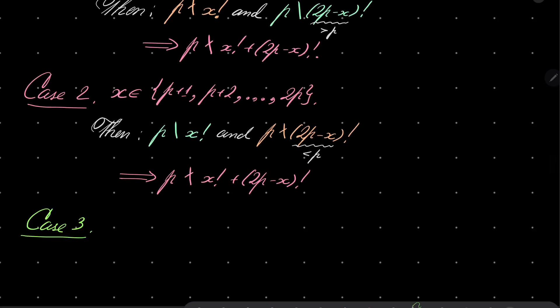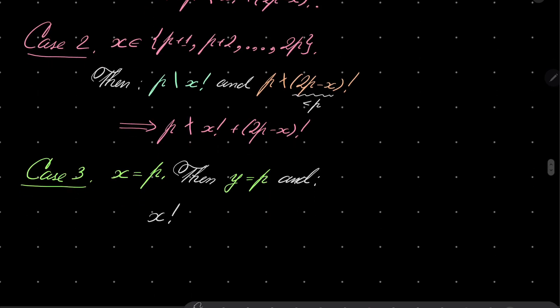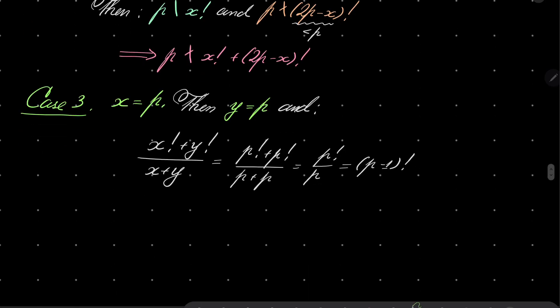case number three, when x is p, notice that then y also equals p. And notice that x factorial plus y factorial over x plus y, it's p factorial plus p factorial over p plus p, it's p factorial over p, and this is p minus 1 factorial, which is an integer. So indeed, we have exactly one pair of solutions.